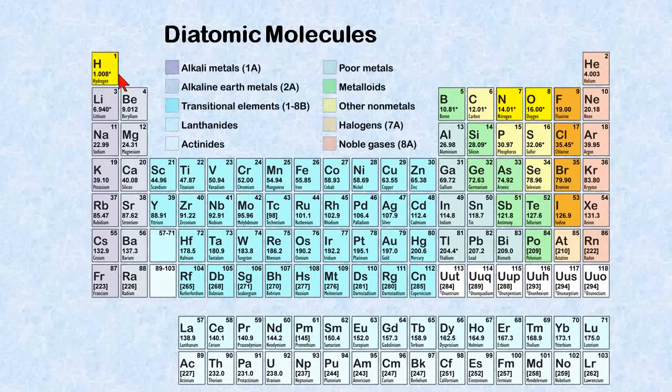There are seven diatomic molecules on the periodic table. They're hydrogen, nitrogen, oxygen, fluorine, chlorine, bromine, and iodine. We're going to review those in just a moment.